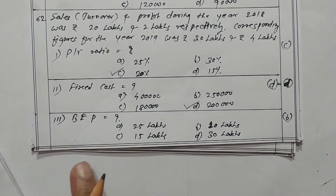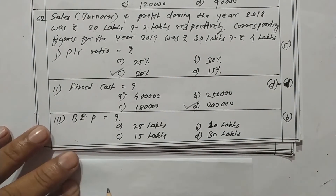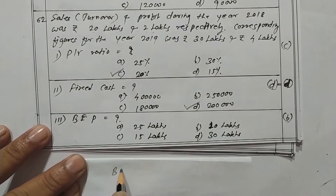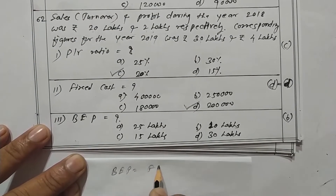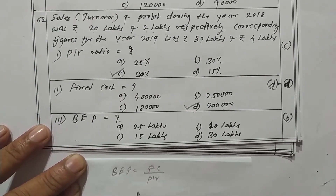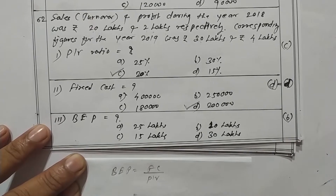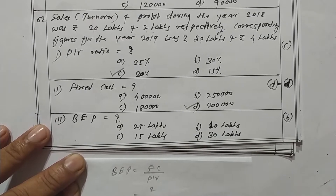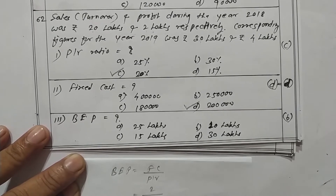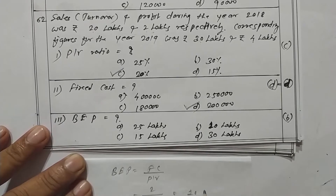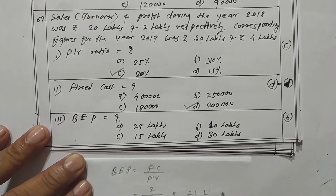Now what is the BEP — Break Even Point? The formula is fixed cost upon PV ratio. Fixed cost is 2 lakhs and PV ratio is 20 percent. Therefore rupees 10 lakhs is the BEP.